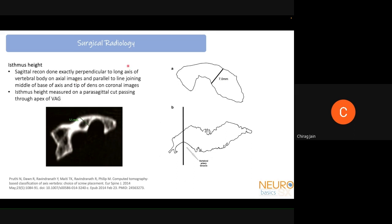For isthmus height, a true sagittal cut is required. The isthmus height is measured on a parasagittal cut beyond the midline, through the apex of the vertebral artery groove. At the junction of the anterior three-quarters and posterior one-quarter of the vertebral artery groove, the isthmus height is measured.